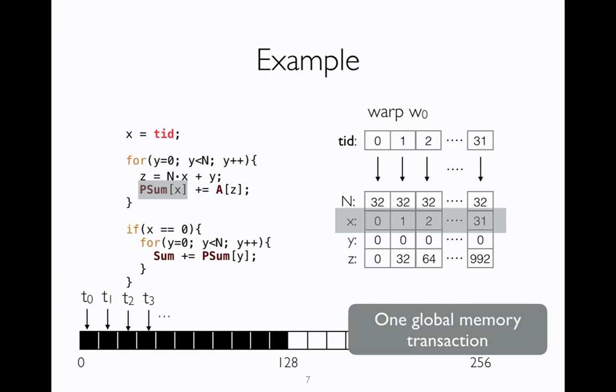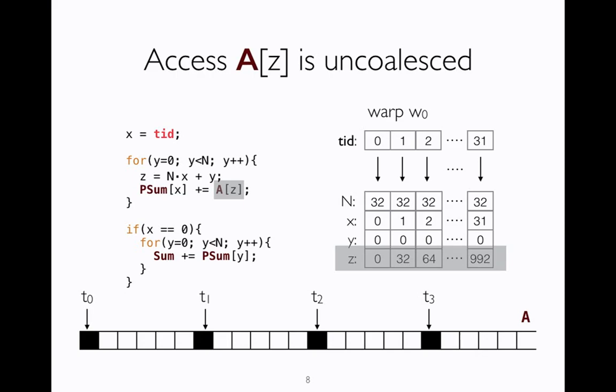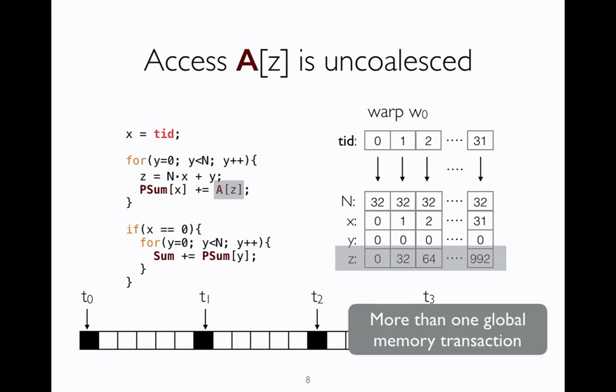Now when the access to A occurs, there is a problem. A is indexed by z, and z takes values that are distant from each other. Therefore the locations that are accessed in A are spread apart in memory. To access all these elements, we need multiple transactions to global memory, because in one transaction only contiguous memory elements are brought in. Such a global memory access is known as uncoalesced access. It causes significant performance issues and is one of the primary reasons why GPU programs don't perform well.